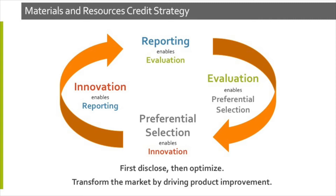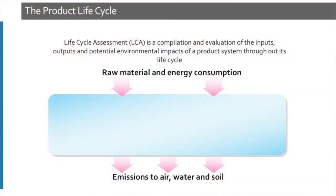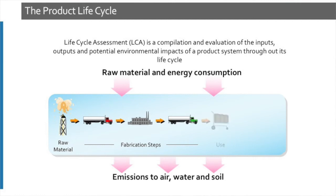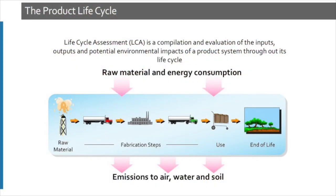A lot of the transparency information is based on the product life cycle. A life cycle assessment is conducted on products looking at their impact from the beginning of manufacturing — from raw material selection and raw material harvesting — all the way through transportation, manufacturing, delivery to the use site or the job site, and finally the disposal or recycling of that product at the end of its useful life. All of the inputs such as energy and water are calculated, as well as the emissions from those different processes, whether it's transportation emissions or emissions from the factory, and those are all added together to provide the total impact for that product, which can be measured in different terms and reported.